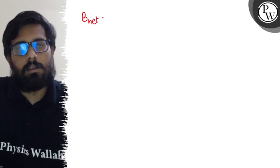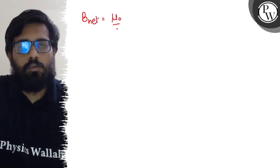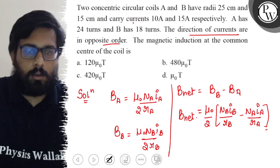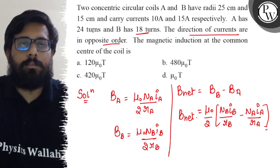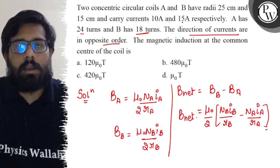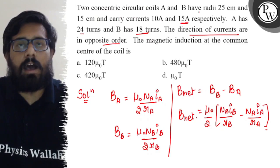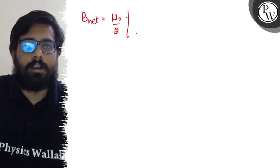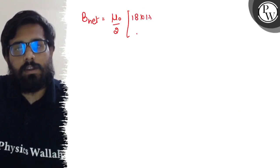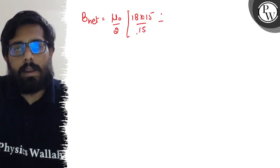Now putting the values. B_net can be written as mu naught by 2. Now n_B, number of turns in B is 18. Number of turns in A is 24. Current in B is 15 and r_B is 15 centimeters. So 18 times 15 upon 15.